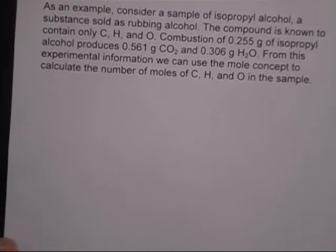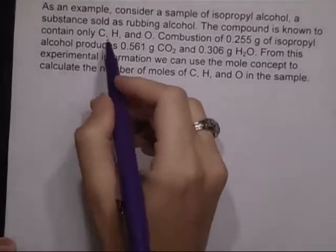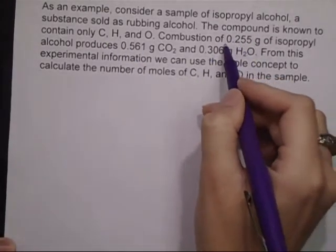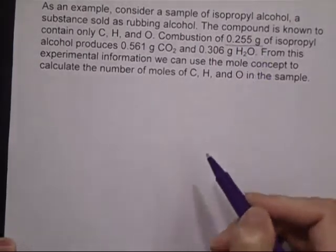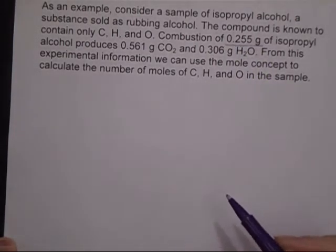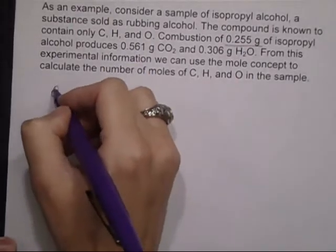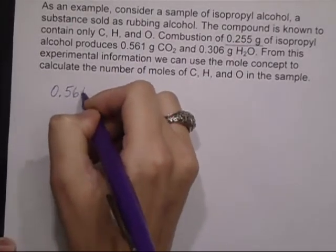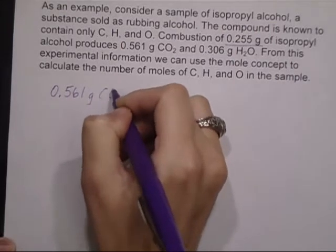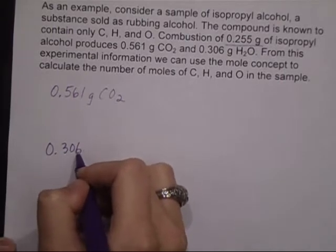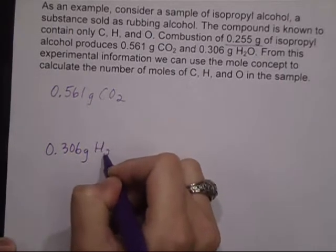All right, we have in this particular case a compound with carbon, hydrogen, and oxygen. We're told that we have 0.255 grams of this isopropyl alcohol substance, and we're also told that we produce 0.561 grams of CO2 and 0.306 grams of H2O.